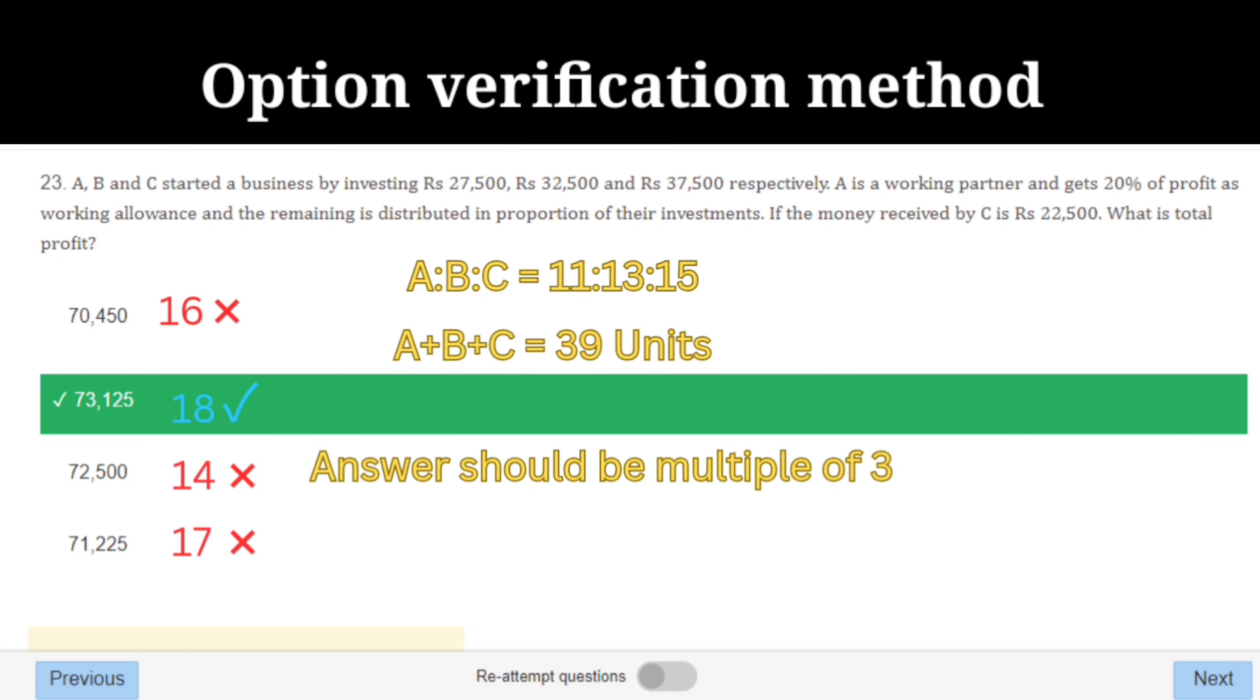Next question: what is the total profit? Which means we have to find the ratio of a, b, c. Just eliminate the zeros and divide it with 25. You will get the ratio as 11 is to 13 is to 15. The total units is 39, which means the answer should be a multiple of three. Just verify the three multiple in the four options and you will be able to solve it easily.